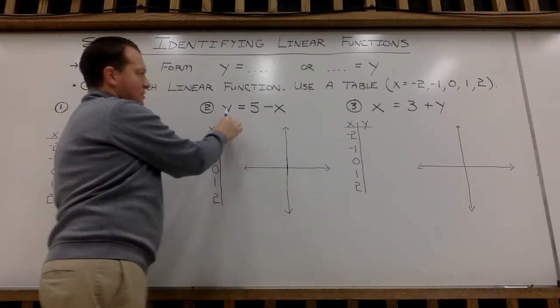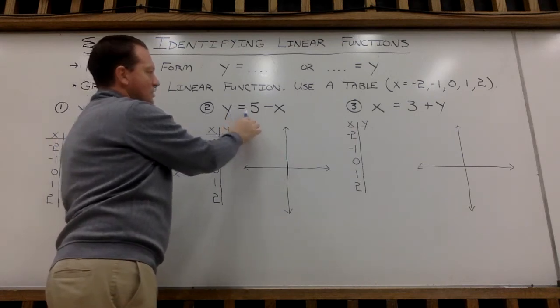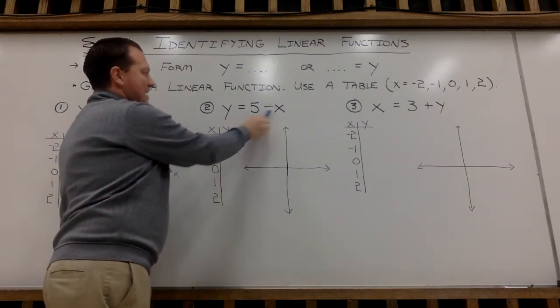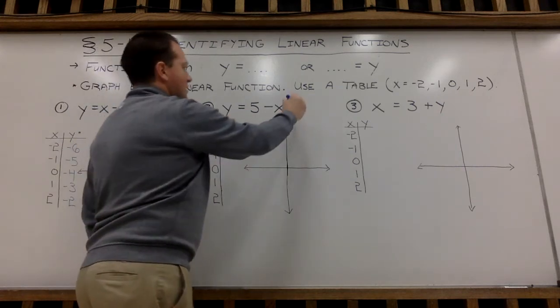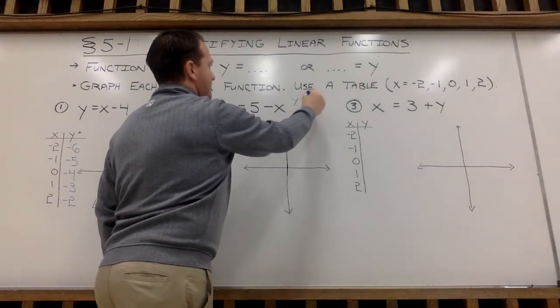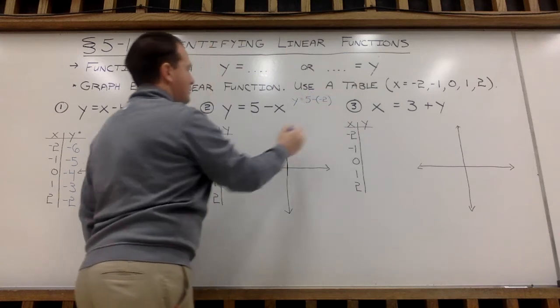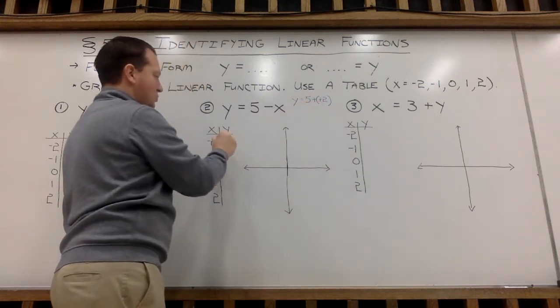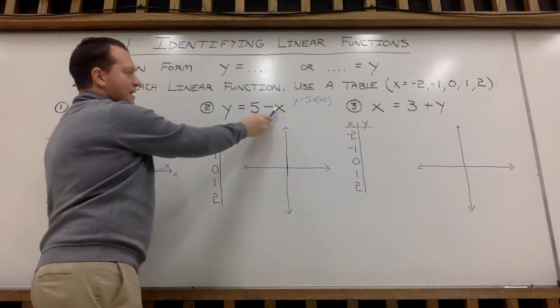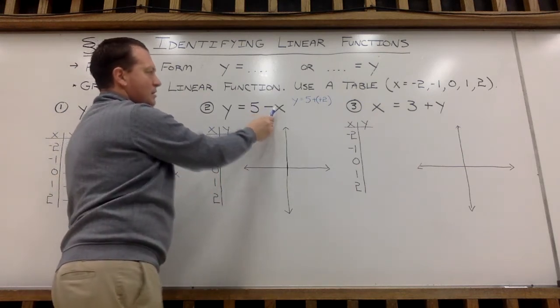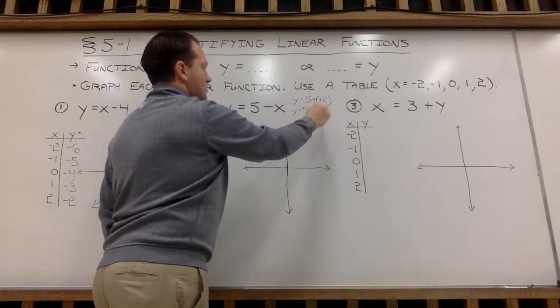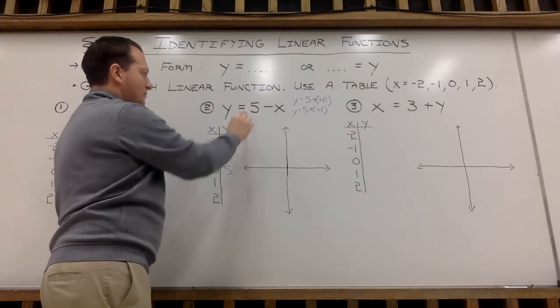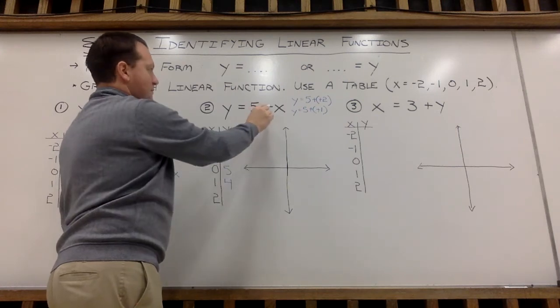Example 2, we also have this equation in function form, y equals everything else. But be careful here. I have y equals 5 minus x. When I plug in negative 2 for x, this is going to be y equals 5 minus negative 2. So 5 minus x is negative 2. So that minus negative will actually turn into a plus. So 5 plus 2 will be 7. When I plug in negative 1, 5 minus negative 1 becomes 5 plus 1, or 6. 5 minus 0 is 5. 5 minus 1 is 4. 5 minus 2 is 3.